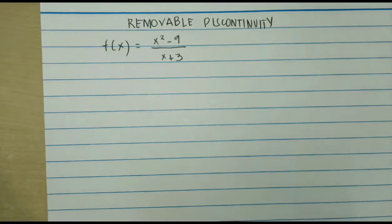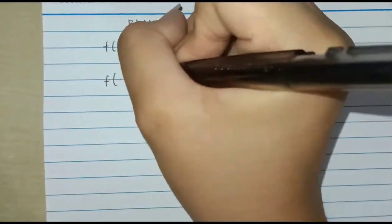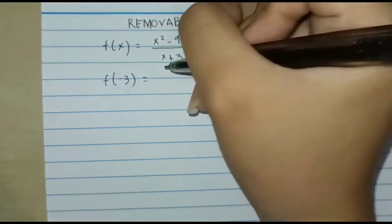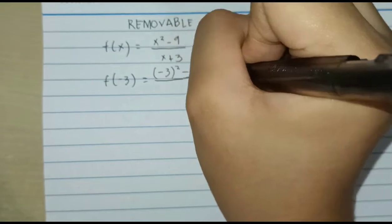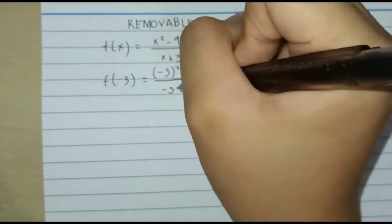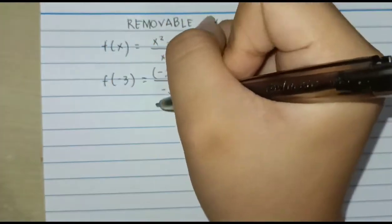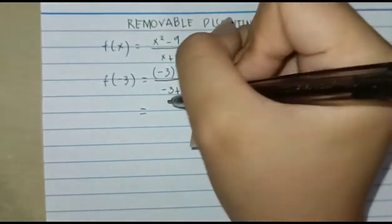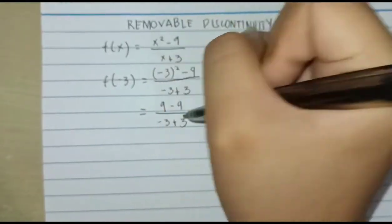So, we have the removable discontinuity example. f of x equals x squared minus 9 over x plus 3. We substitute negative 3 for x in our equation, so f of negative 3 equals negative 3 squared minus 9 over negative 3 plus 3, which becomes 9 minus 9 over negative 3 plus 3. The result is 0 over 0, which is indeterminate.